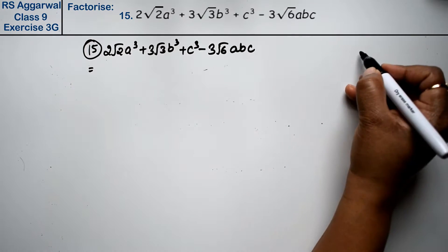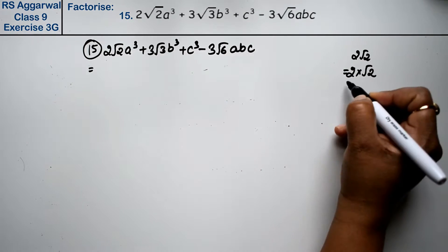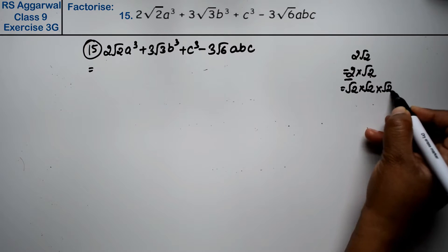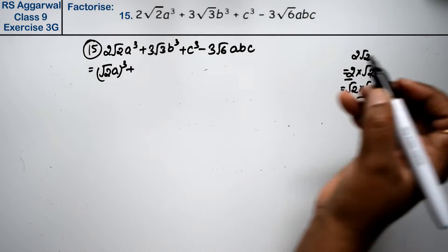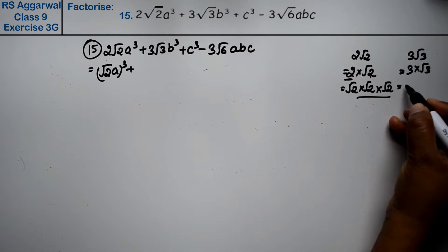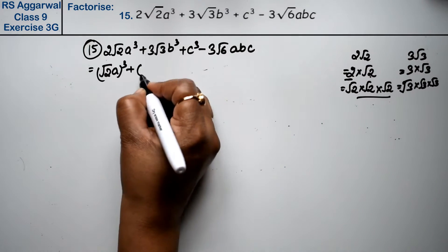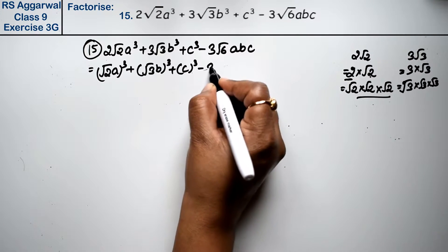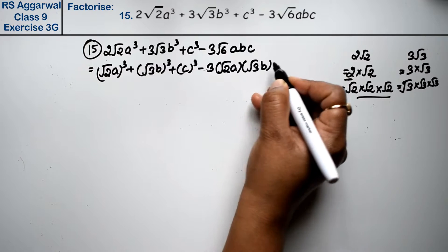Now, 2√2 can be written as √2·√2·√2, which is (√2)³. So we have (√2·a)³. Similarly, 3√3 can be written as √3·√3·√3, giving us (√3·b)³. So the expression becomes (√2·a)³ + (√3·b)³ + c³ - 3·(√2·a)·(√3·b)·c.